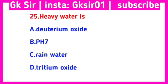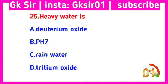Question number 25. Heavy water is — Option A: deuterium oxide, Option B: pH 7, Option C: rain water, Option D: tritium oxide. The correct answer is Option A: deuterium oxide.